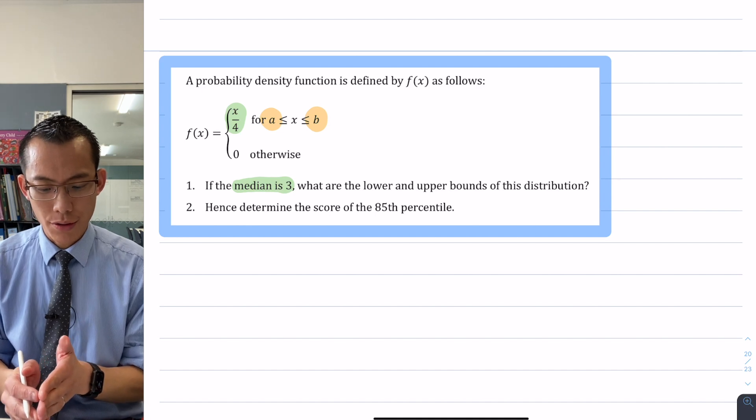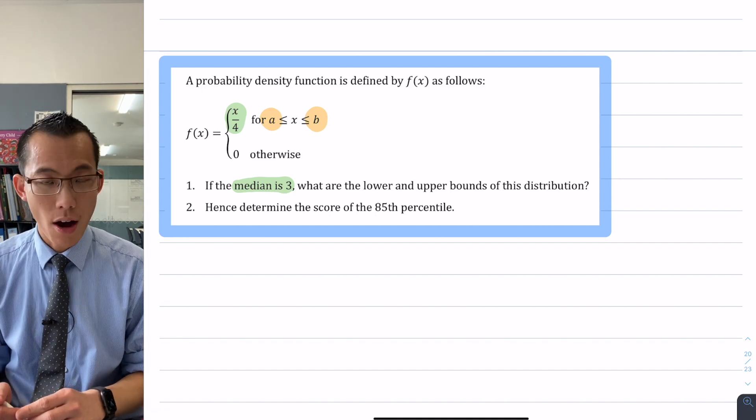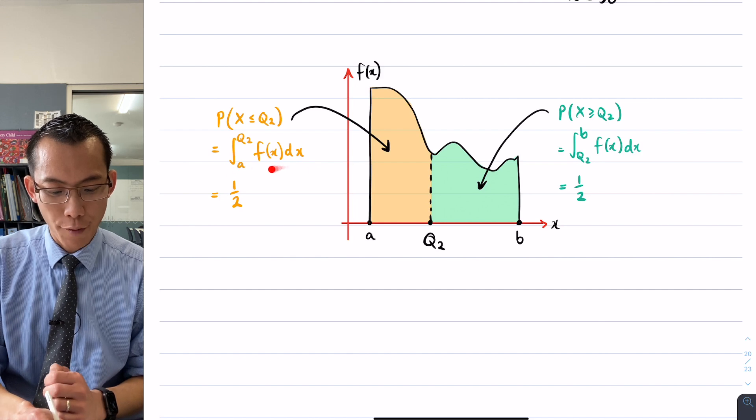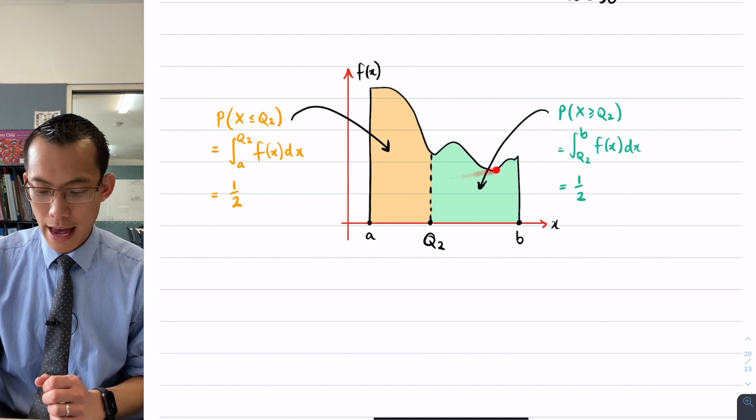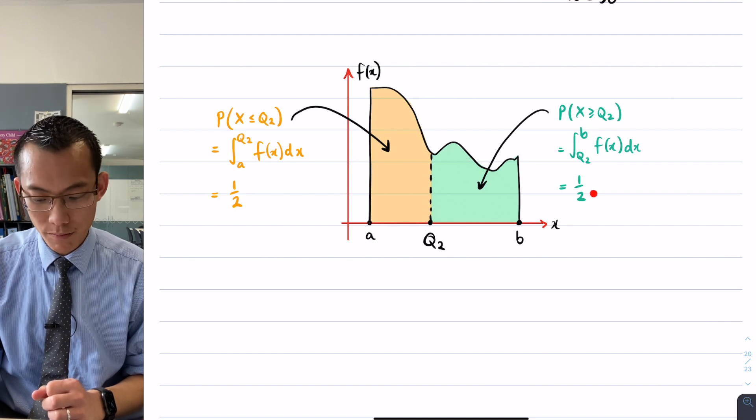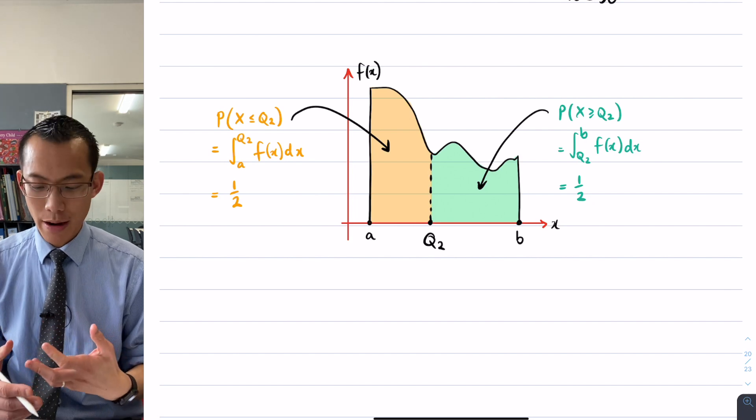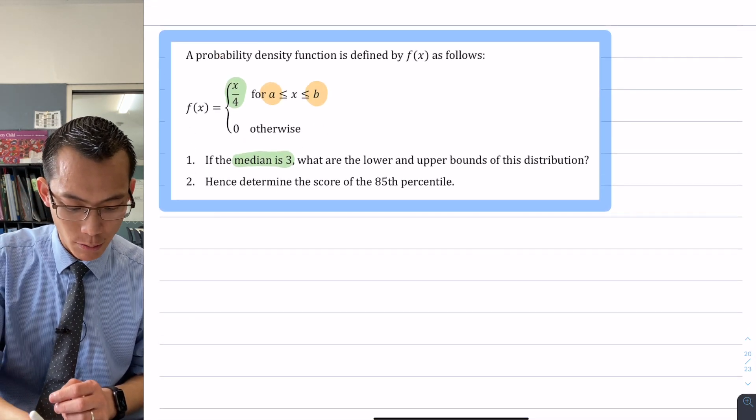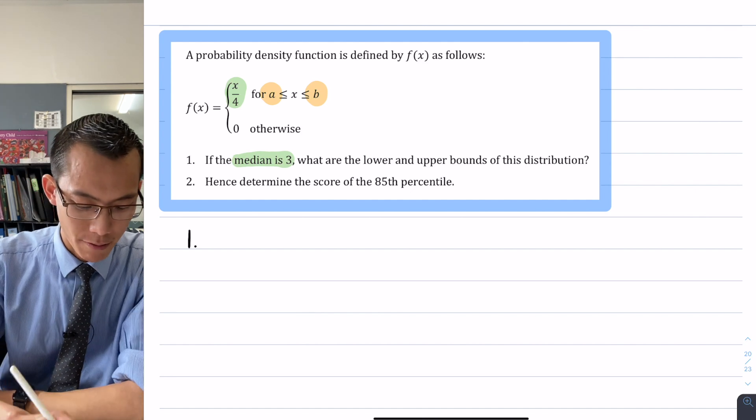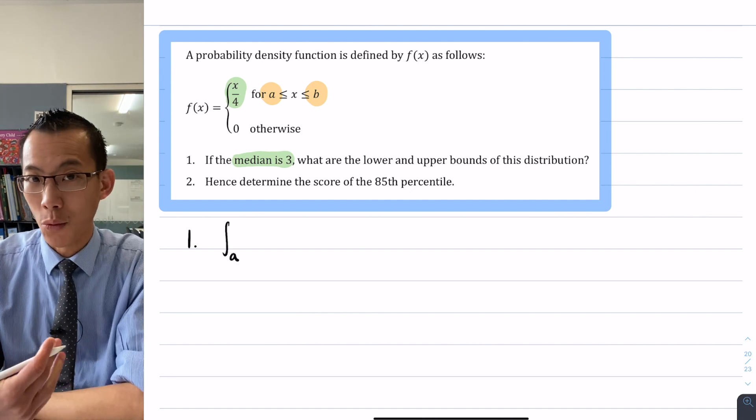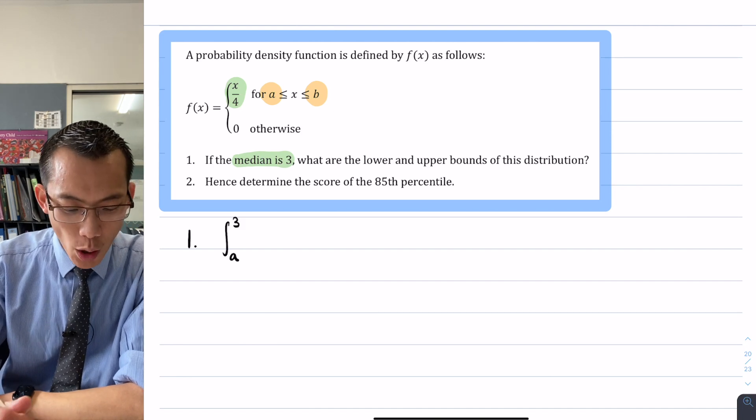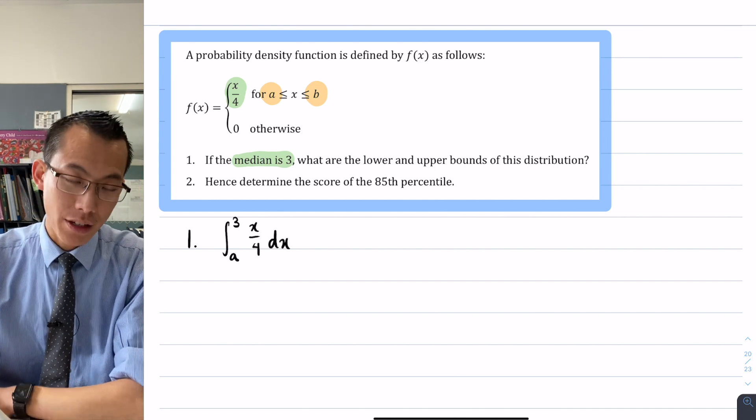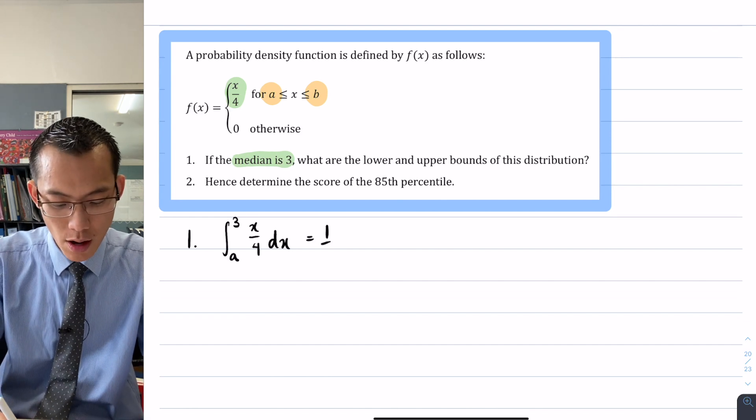So how do I use this piece of information to then calculate what the lower and upper bounds are of this distribution? Well what I'm going to do, coming back to this diagram here, is I'm going to use these two pieces of knowledge: that from the lower boundary to the median will give me a half, and from the median to the upper boundary, that integral will also give me a half. I can use them to evaluate what a and b are, because in this case I know what Q2 is, it's 3. So let's form some integrals that make this statement. The integral from the lowest boundary, which I don't know, up to the median, which is 3, of my particular function, which in this case is x over 4—if I integrate that, that should give me 50% of the scores, so its probability will be a half.